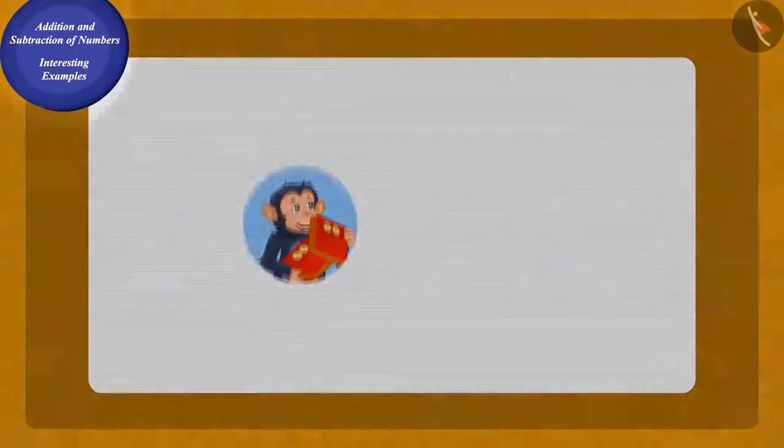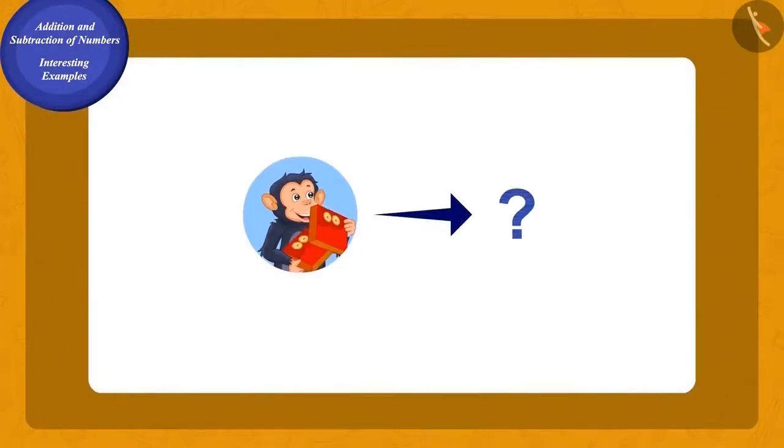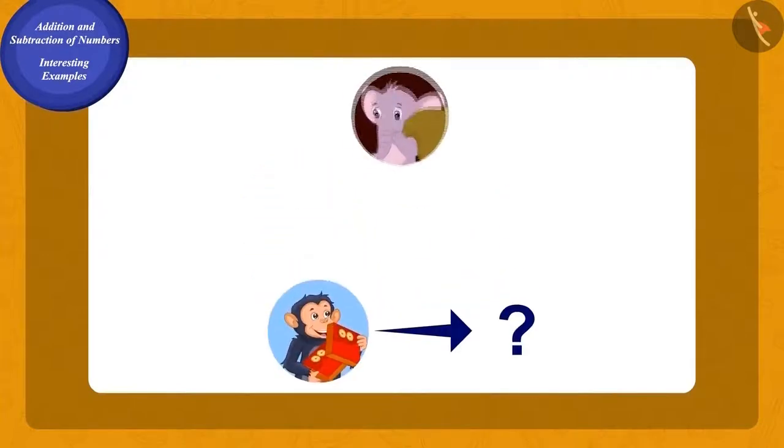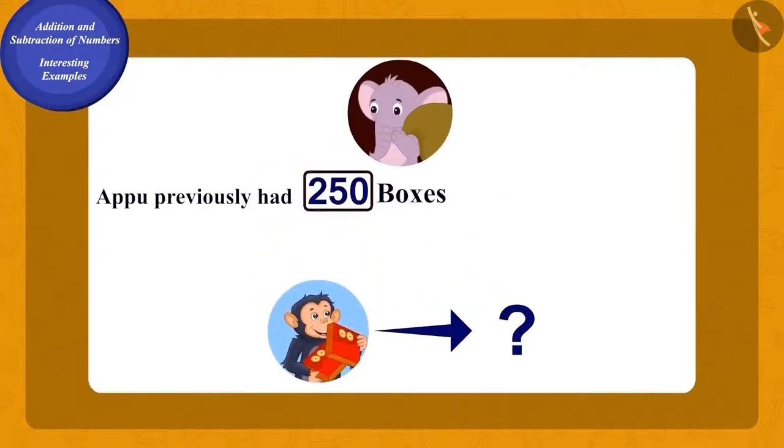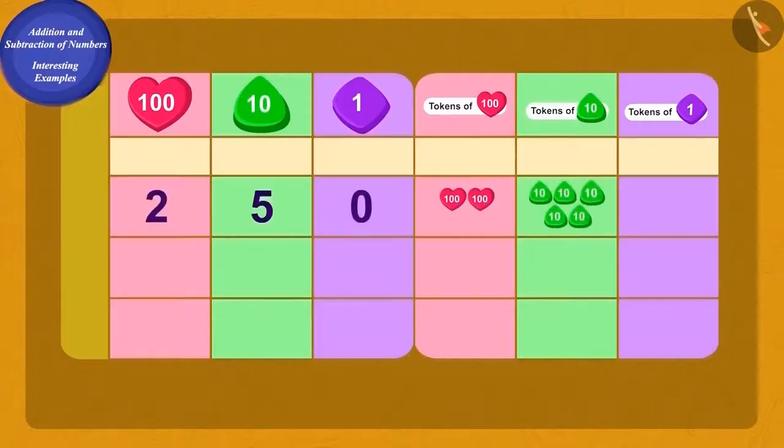How do we find out the number of boxes the monkeys had taken? We need to subtract the number of boxes left with Appu from the number of boxes Appu was carrying with him. We will write 250 and 31 using 100, 10, and 1-digit places in the place value chart. Is this correct, children?